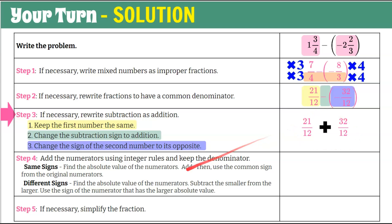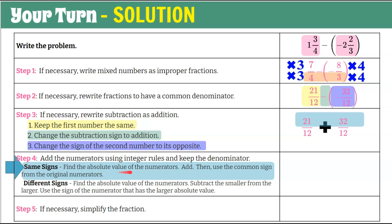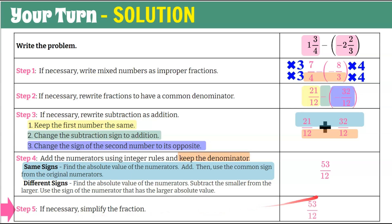Now that we have addition, we can go back and review our adding rules. Step 4: add the numerators using integer rules. Both numerators are positive — the same sign — so we find the absolute values, add, and keep the common sign. Both are positive, so the sum is positive. 21 plus 32 is 53, and we keep our denominator of 12. Step 5: simplify. This is in simplest form, or you can write it as a mixed number. 12 goes into 53 four times, so either 53 twelfths or 4 and 5 twelfths.